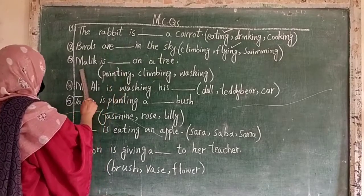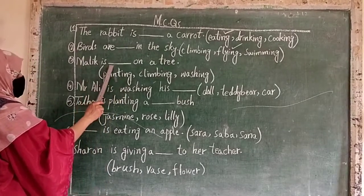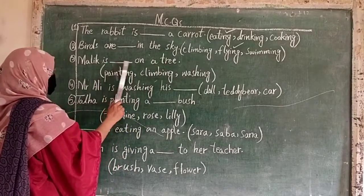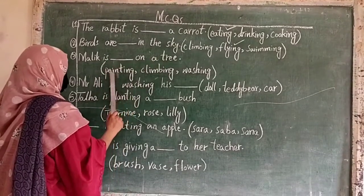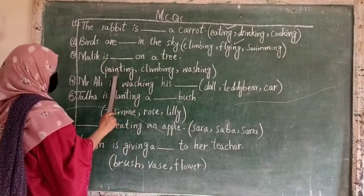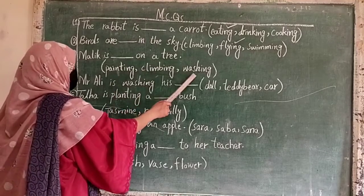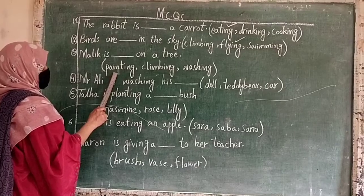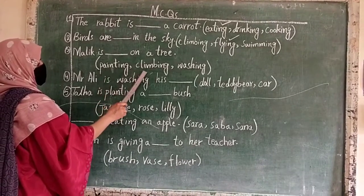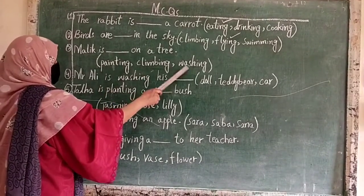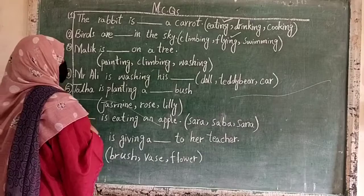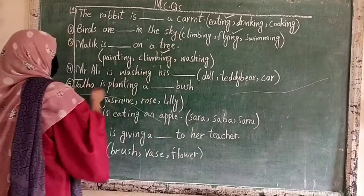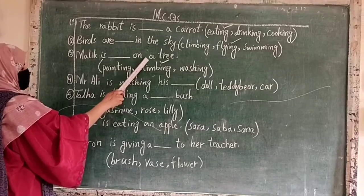Number 3: the rabbit is ___ near our tree. Options are: painting, camping, or washing? The answer is camping. The rabbit is camping near our tree.